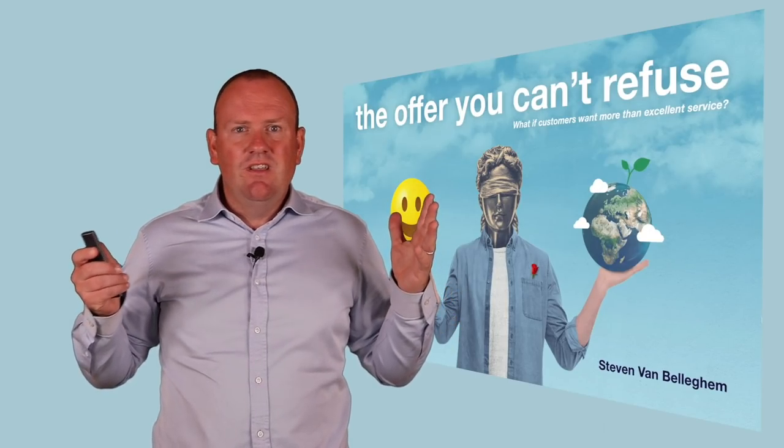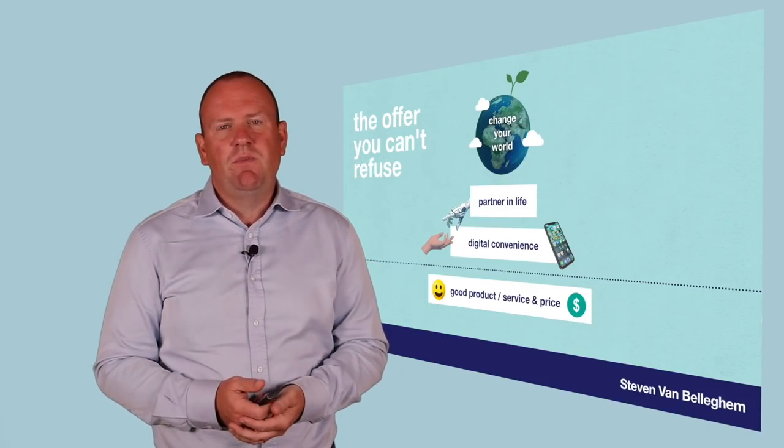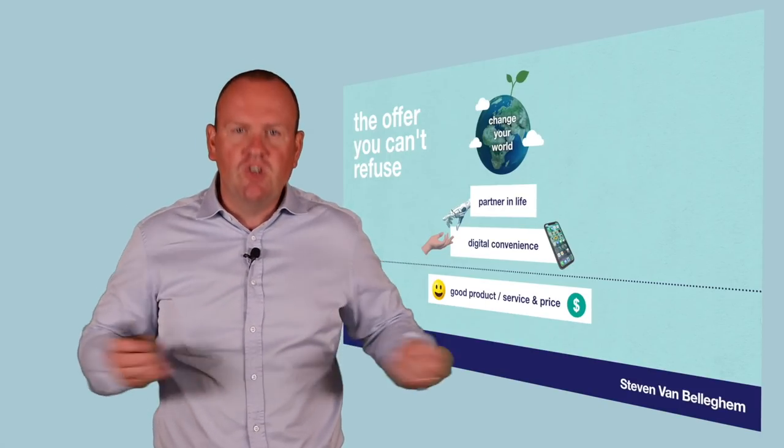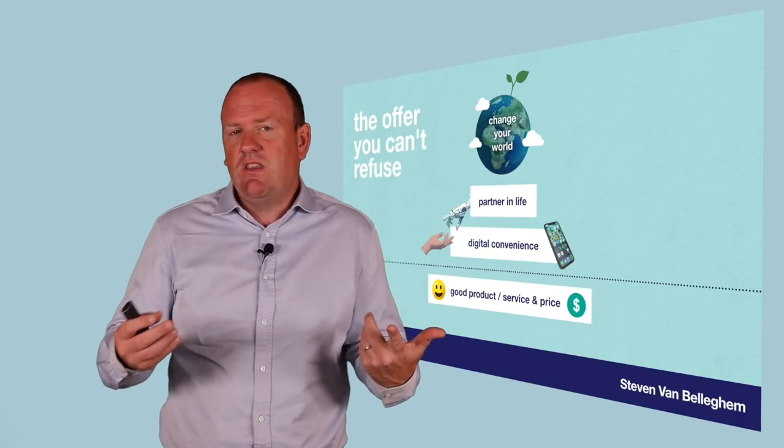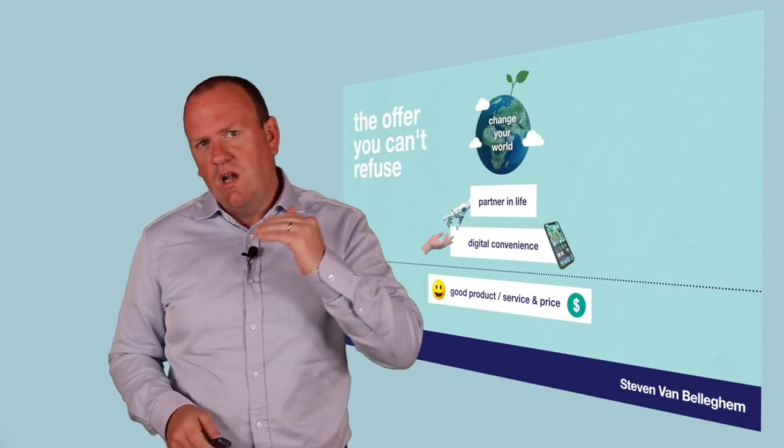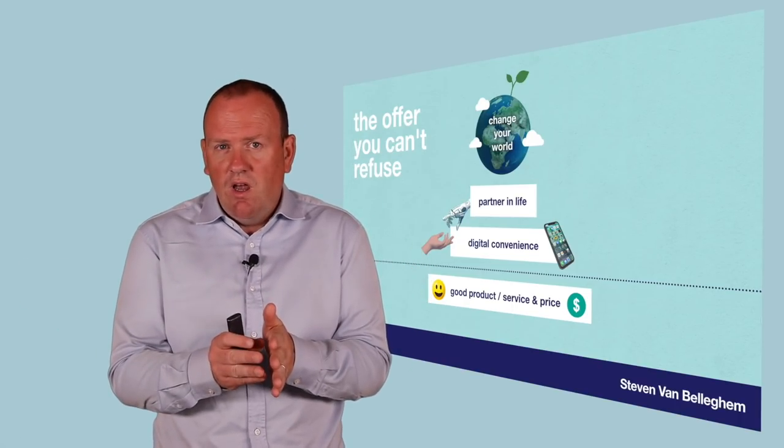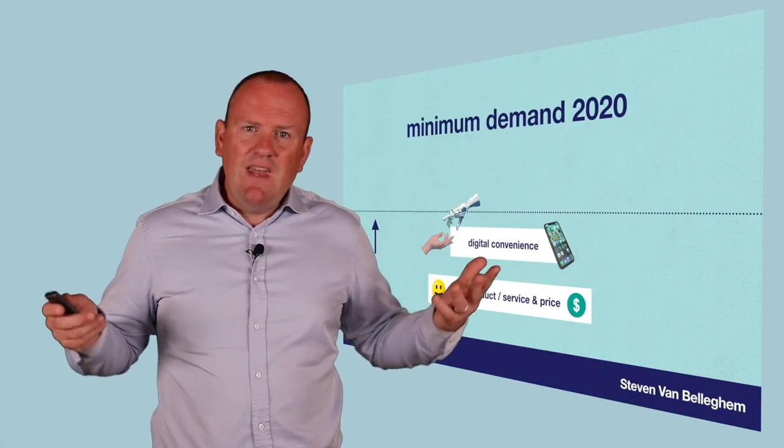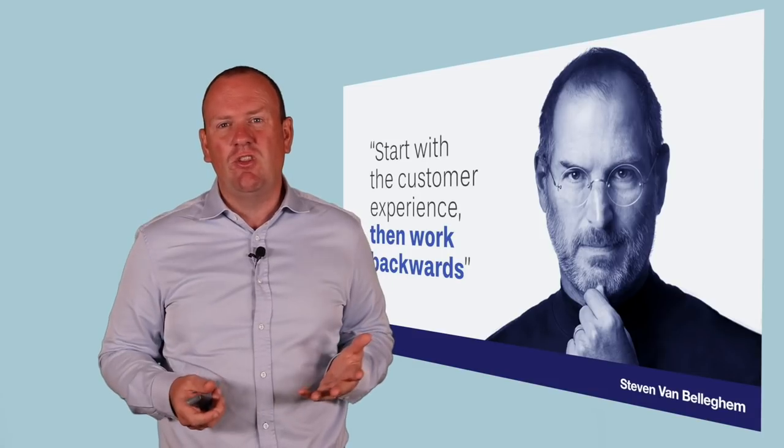Now, if you look to the offer you can't refuse, if you look at how well they are performing in customer experience, I always work with this model with four layers. If you want to be successful in today's world, of course, you need good products, price, and service. You need digital convenience. But more and more, customers expect you to become a partner in life with broader services. And people expect you to add value to society. Four layers that bring value to the customer. And if you bring those together in one storyline, you're actually bringing an offer people can't refuse.